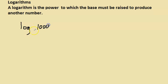What is log 1000 base 10? To get the answer, we ask ourselves: what power do I need to raise the base of 10 in order to get 1000? In other words, 10 to which power gives me 1000? The answer is 3, so log 1000 base 10 is 3.